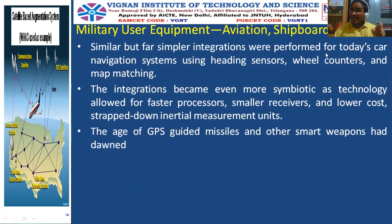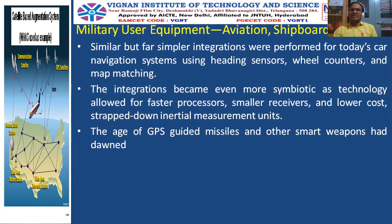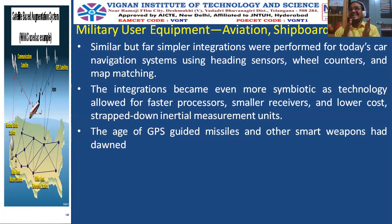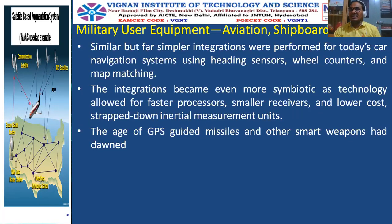Far simpler integrations were also performed for car navigation, using GPS for heading sensors, wheel counters, and map matching. During the arrival of US President Bill Clinton — when Chandrabhabu Naidu was Chief Minister — this technology was used for the first time to navigate the US President's car. The entire transportation concept known as Intelligent Transportation System, or ITS, originated from that GPS-based navigation.